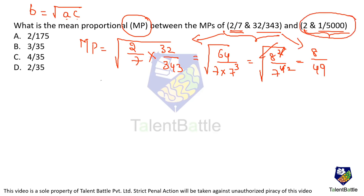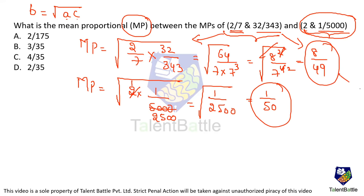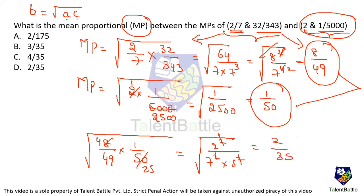Similarly, mean proportion of 2 and 1/5000: root of (2 into 1/5000) equals root of 1/2500. Root of 2500 is 50, so this is 1/50. Now find the mean proportion of these two mean proportions: root of (8/49 into 1/50). Simplifying: root of (4 over 49 into 25), which is root of (2 squared over 7 squared into 5 squared), giving 2 divided by 35. The answer is Option D.